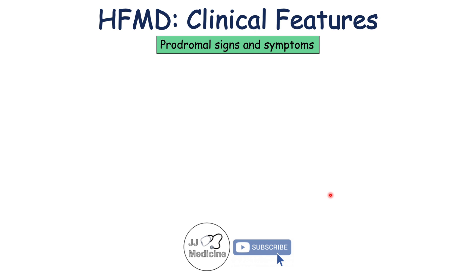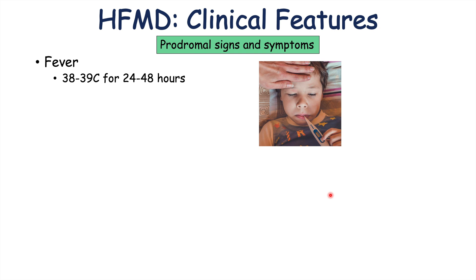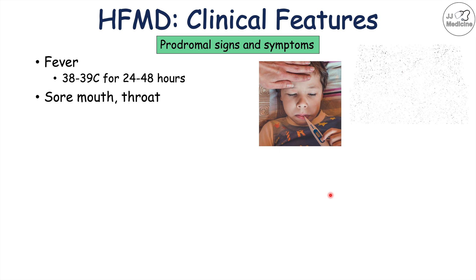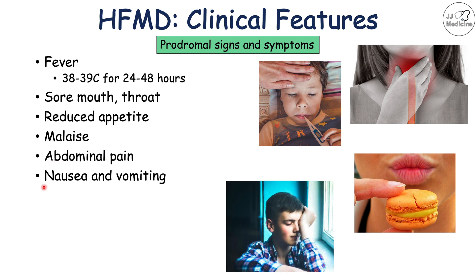Now let's talk about the clinical features of hand, foot, and mouth disease. There is a brief prodrome — signs and symptoms that occur before the hallmark findings of the condition. The hallmark findings are the rash affecting the hands, feet, and mouth. The prodrome includes: a fever of 38 to 39 degrees Celsius lasting about 24 to 48 hours, a sore mouth or sore throat, reduced appetite, malaise, and feeling generally unwell. Some patients can have abdominal pain, nausea, and vomiting, which are more likely with enterovirus 71 infection. These prodromal symptoms occur for roughly 12 to 36 hours prior to the onset of the rash.